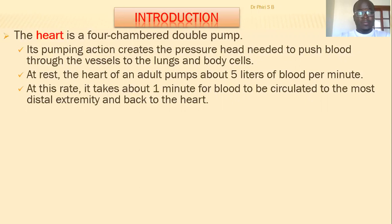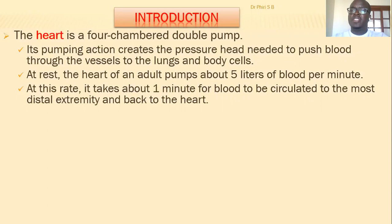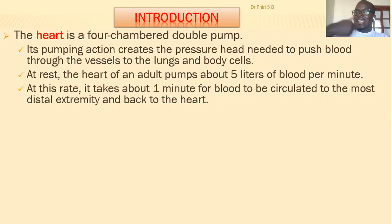At rest, the heart of an adult pumps about five liters of blood per minute. At this rate it takes about one minute for blood to be circulated to the most distal extremity and back to the heart. On average, a normal person has about five liters of blood — as covered in blood physiology. So the heart pumping five liters every minute means that every minute, blood goes into circulation and back to the heart again.